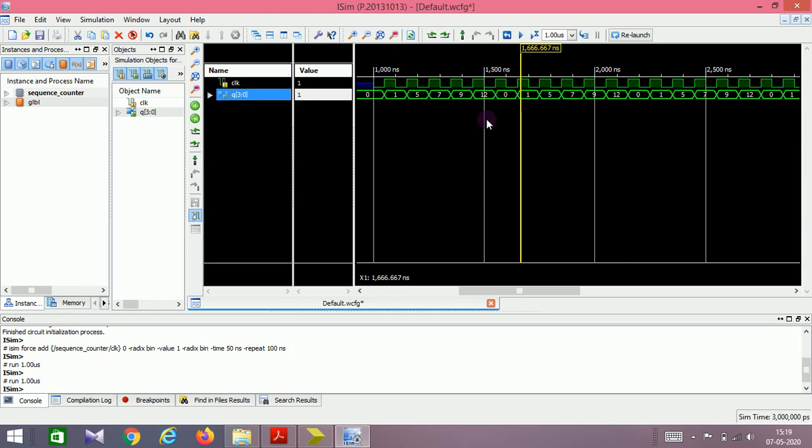There is one more application of the sequence counter. We have an interfacing experiment in Verilog wherein we connect a stepper motor card with an FPGA in order to rotate a stepper motor. So there, to rotate a stepper motor, the logic is quite simple. You need to just design or write a Verilog code for a sequence counter wherein the sequence is 3, 6, E, 9.